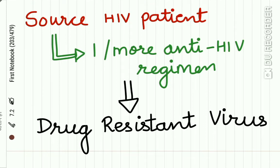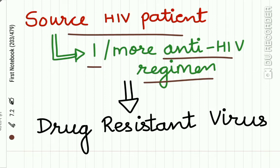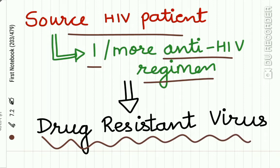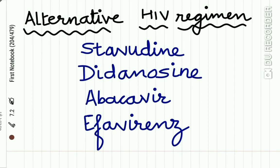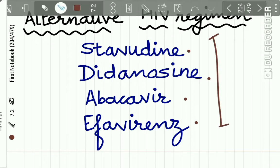If the source HIV patient is known to have received one or more anti-HIV regimens, the virus may be resistant to those drugs. Alternative HIV regimen drugs are then used, including Stavudine, Didanosine, Abacavir, and Efavirenz. Drugs taken by the source patient are generally avoided.